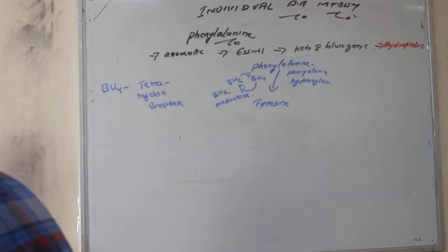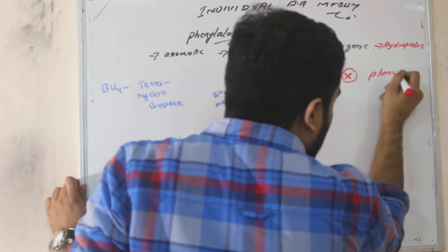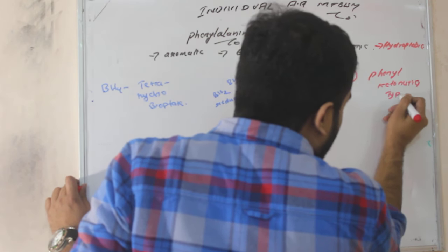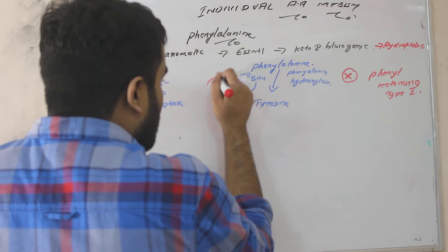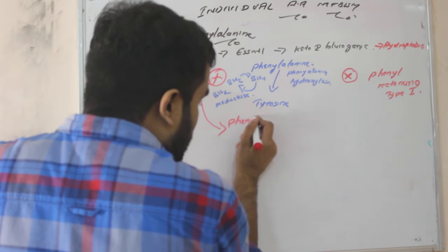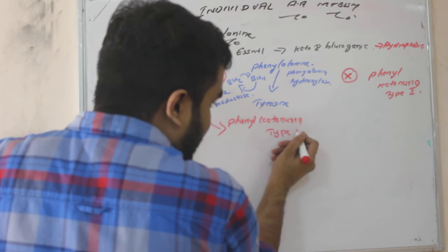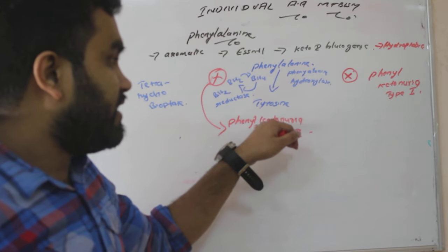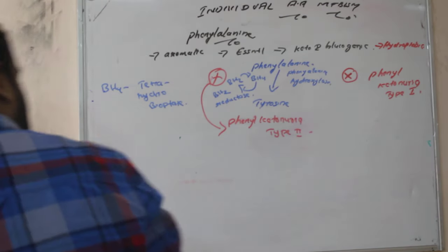Now if this enzyme is absent, we call it as a disease, that is known as phenylketonuria type 1. Now if this cofactor, if the cofactor is absent, we call it as phenylketonuria type 2. When this is absent, type 1. When BH2 is deficient, phenylketonuria type 2.